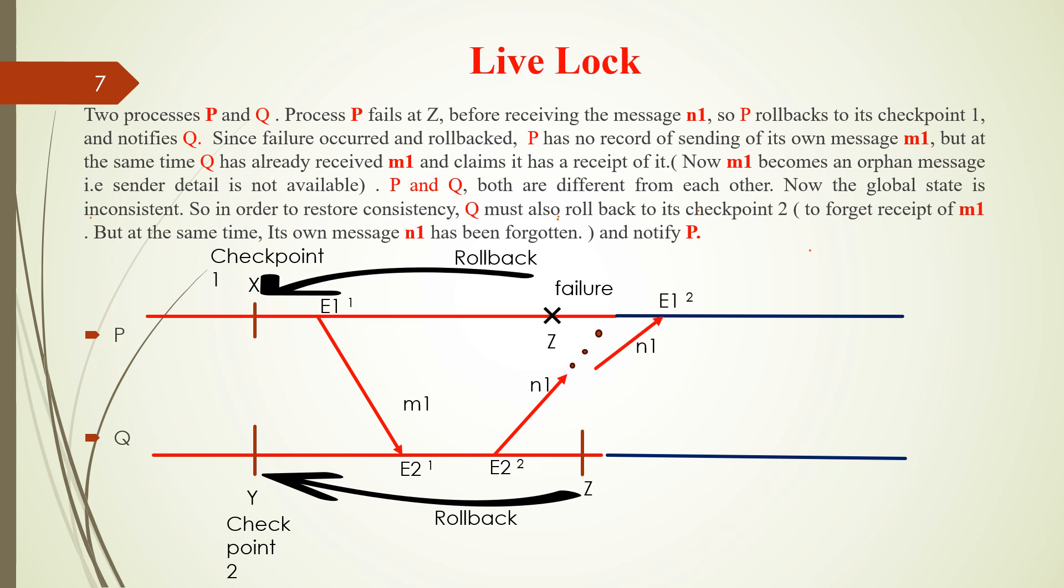Now Q has a record of the message M1. So Q claims it has the record of receiving M1, but P is saying it has sent no message to Q. Now M1 received, sender detail is not available. P and Q both are different from each other. Now the global state is inconsistent. So M1 becomes an orphan message.